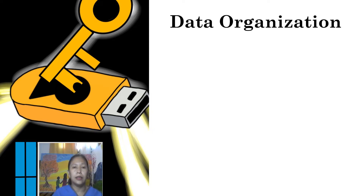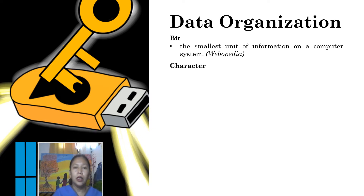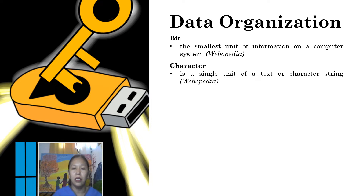And then we have bit. If we say bit in data organization, this is what we call the smallest unit of information in a computer system. And then we have the character. If we say character, this is a single unit of text or a character string. For example, A, B, C — those are characters.